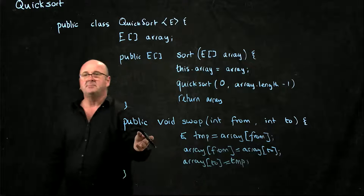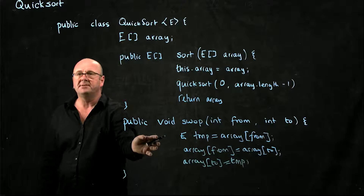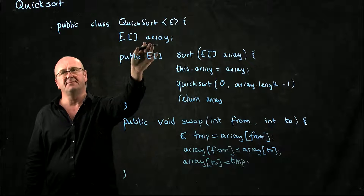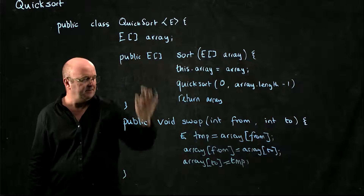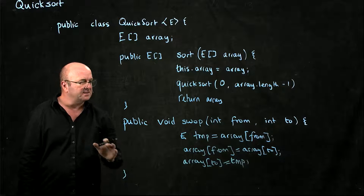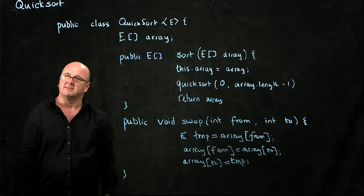It's a very simple swap method. It uses our globally scoped array variable, and it's going to work every time.